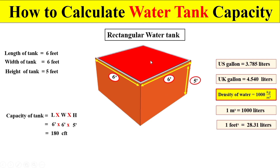Dear students, if we are interested to calculate this water tank capacity in terms of liters, since one cubic foot contains 28.31 liters, we multiply 180 cubic feet by 28.31 liters to get the total capacity in terms of liters.